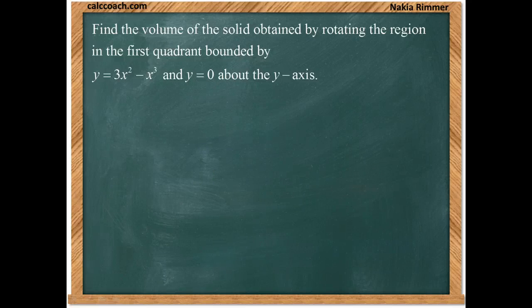Find the volume of the solid obtained by rotating the region in the first quadrant bounded by y equals 3x squared minus x cubed and y equals zero. This will be rotated about the y-axis.